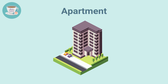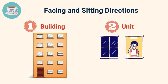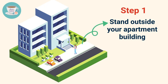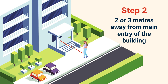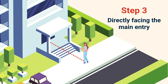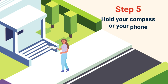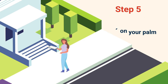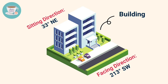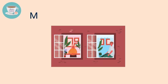For an apartment, you need to measure the sitting and facing direction of your building and your unit using the same steps for measuring houses. First, stand outside your apartment building, two or three meters away from the main entry, directly facing it to form a 90-degree angle. Then hold your compass or phone steady on your palm to measure the sitting direction of the building. In this example, the sitting direction is 33 degrees Northeast, and the facing direction is 213 degrees Southwest.